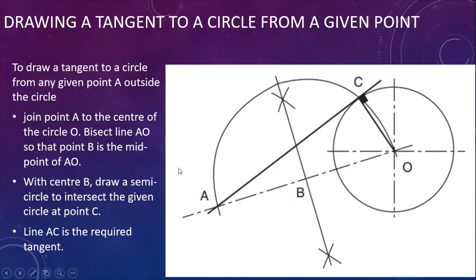The first thing you do is draw the circle with center lines. Then you join point A, which is outside of the circle, to the center of the circle at point O. Then we bisect the line AO to find its midpoint. The midpoint of line AO is called point B.